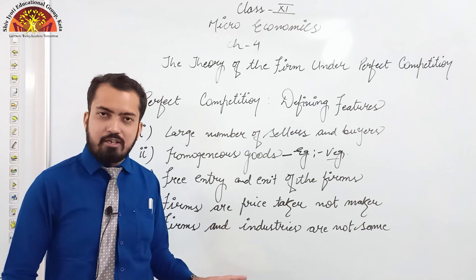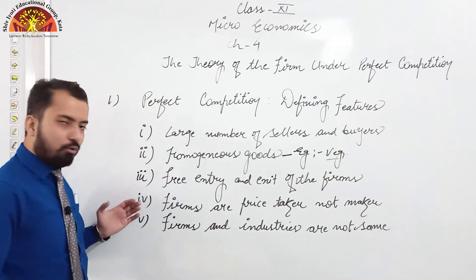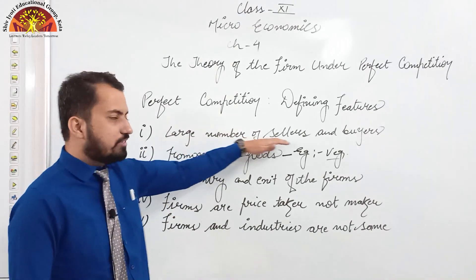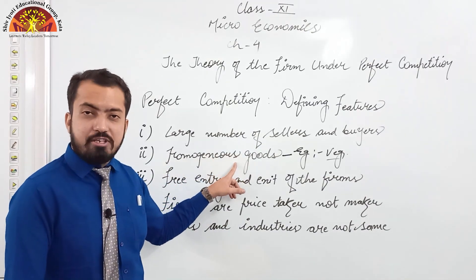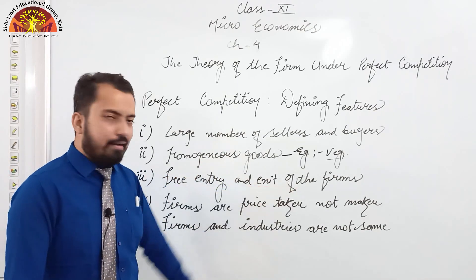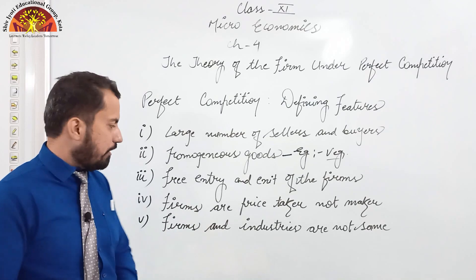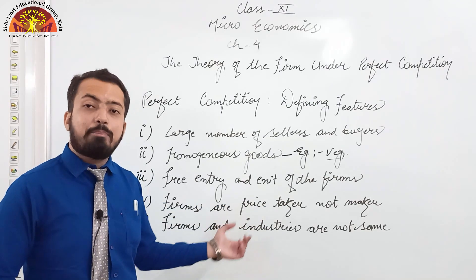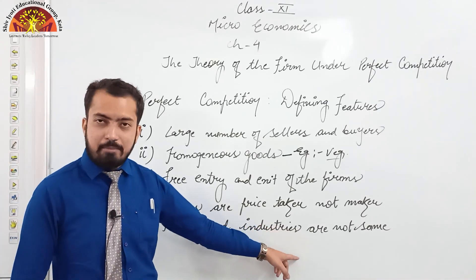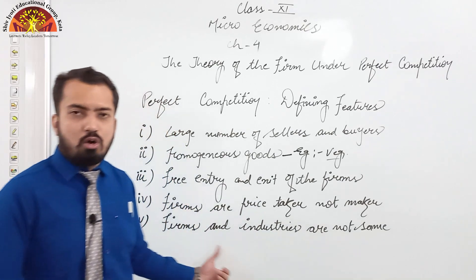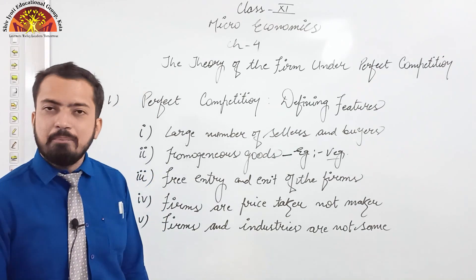Students, please copy these points into your notebook. Up to here we have completed 5 points. To repeat: first, large number of sellers and buyers; second, homogeneous goods — similar in all aspects; third, free entry and exit of firms — no legal authority or legal actions required; fourth, firms are price takers not makers — they take the price but cannot decide it on their own; fifth, firms and industries are not the same — industries give instructions and firms follow them, which is why firms cannot change prices independently.